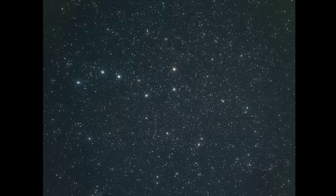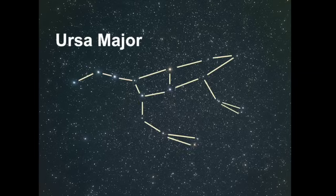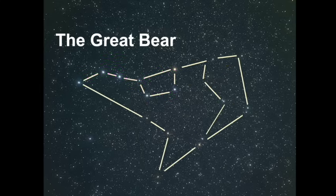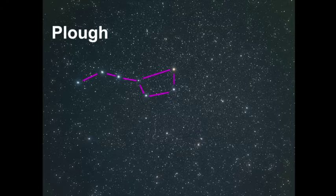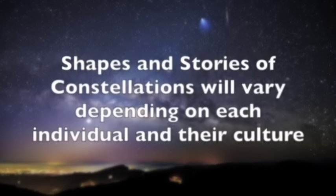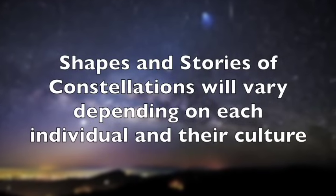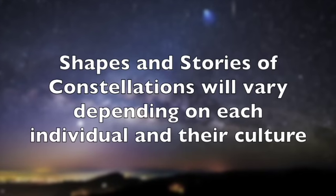The stories and shapes of constellations will vary depending on who is looking at them. For example, Ursa Major, which contains the asterism called the Big Dipper, has also been known as the Great Bear — or perhaps you see this version of the bear, or maybe you just see a plow instead. Remember that the story and shape of each constellation will vary depending upon each culture and what each individual sees.